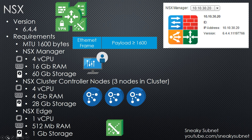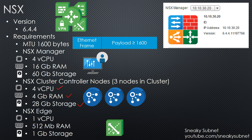NSX Manager is a management plane component and it needs four vCPUs, 16 gigs of RAM, and 16 gigs of storage. The NSX cluster controller consists of three nodes and forms the NSX control plane. Each node requires four vCPUs, four gigs of RAM, and 28 gigs of storage. Finally, we have the NSX Edge appliance and you probably need two of them as I mentioned before — one for distributed routing and one for NSX Edge services. Each node consumes one vCPU, 512 MB of RAM, and one gig of storage.